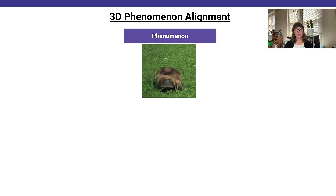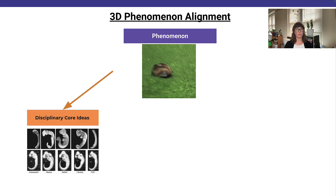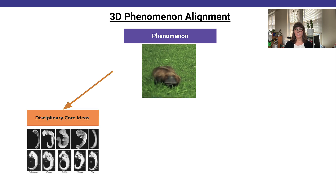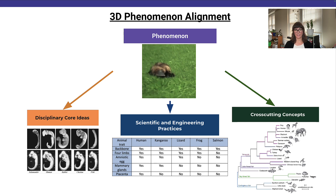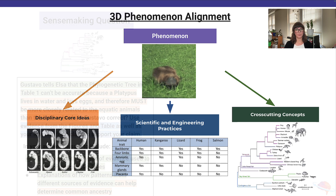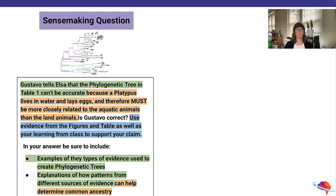Students will use and communicate information from embryological photographs, data tables, and phylogenetic trees to help a student named Elsa establish the evolutionary history and classification of this amazing animal. Ultimately, we want students to answer complex free-response questions, such as the one seen here, and complete rigorous tasks to determine if they've mastered the performance expectation.